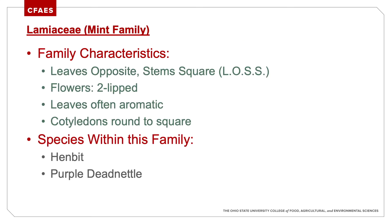Lamiaceae — the mint family. Leaves are opposite and the stem is square. If you snap the stem and it's a box with opposite leaves, you immediately know you're in the mint family. Most of them are aromatic. We're going to cover two: henbit and purple dead nettle.